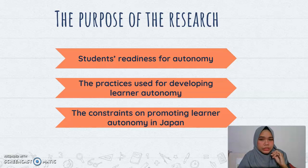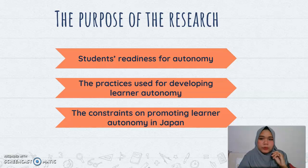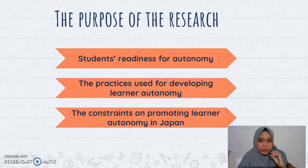The second point is the purpose of the research, which aimed to find out students' readiness for autonomy, the practices used for developing learner autonomy, and the constraints on promoting learner autonomy in Japan. This can be seen from three research questions: first, what is the instructor's understanding of learner autonomy? Second, what obstacles exist to the development of learner autonomy? Third, what is the impact of professional development workshops on the development of learner autonomy?